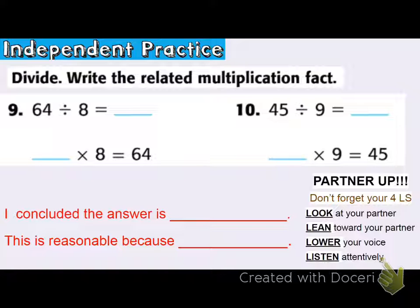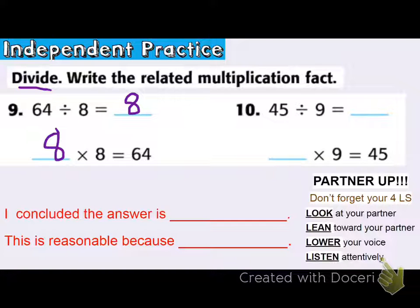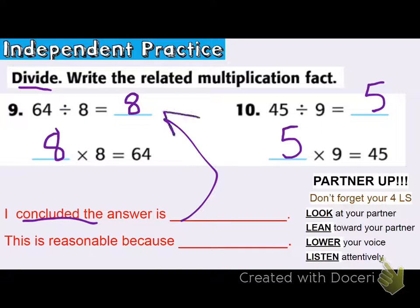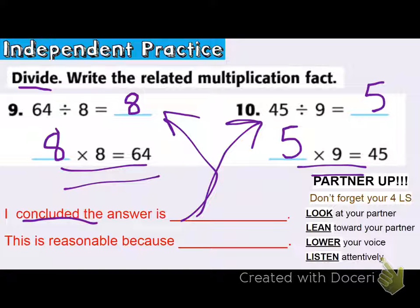I'm going to practice: divide, write the related multiplication fact. So 64 divided by eight — if I take 64 and put it into eight equal groups, what goes in each group? I know eight times eight is 64, so that must mean that 64 divided by eight is eight. Problem 10: 45 divided into nine equal groups — how many are going to go in each group? I know nine times five is 45, so if I have nine groups of five, that will give me 45. The answers are eight and five, and it's reasonable because eight times eight is 64 and five times nine is 45.